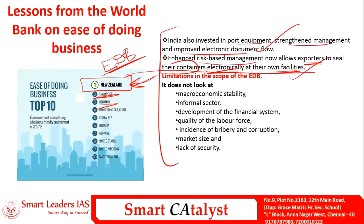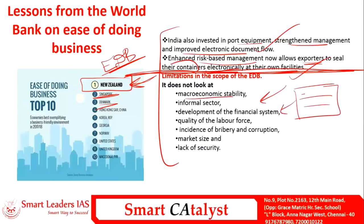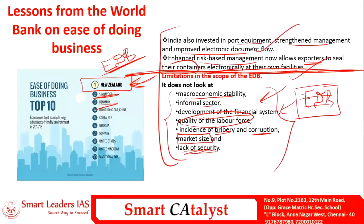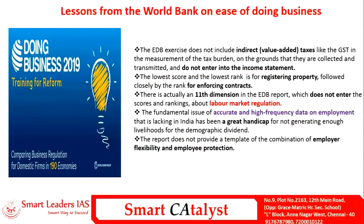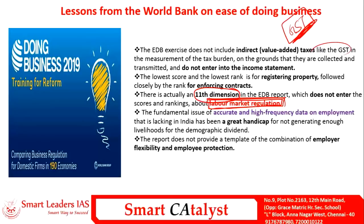Though the EDB covers many contexts, it misses certain areas: macroeconomic stability, informal sector, development of the financial system, quality of the labor force, bribery and corruption, actual market size, and lack of security are not taken into account. There is also one important 11th dimension about labor market regulation that the World Bank should include in upcoming years. India's major GST reform is also not taken into account while calculating ease of doing business — making the report less representative.